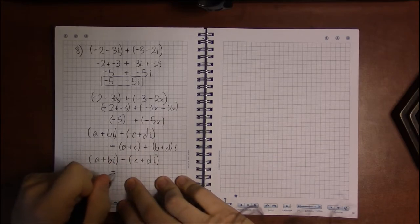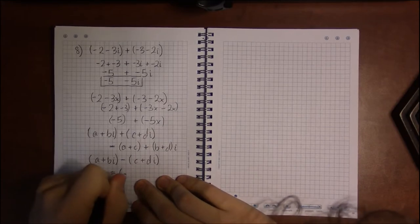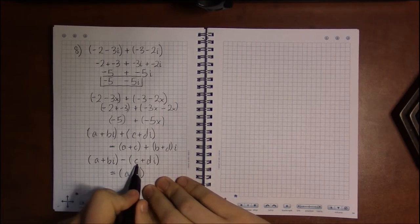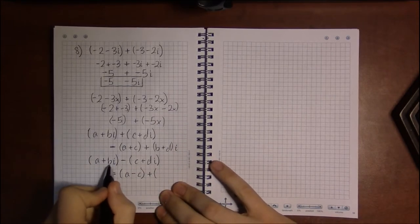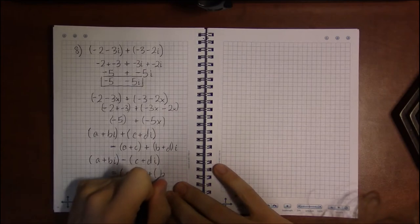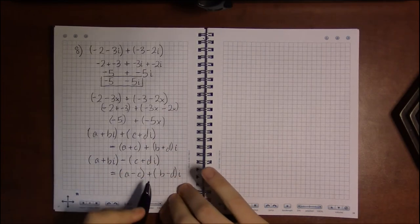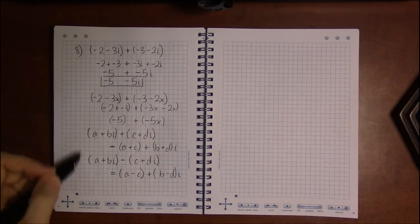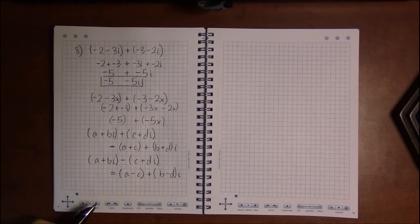So you take the difference between the real parts, a minus c, and then take the difference of the imaginary parts, b minus d, and then slap an i on the end of that imaginary part. So these are the two rules for addition and subtraction of complex numbers.